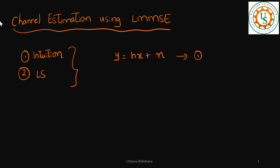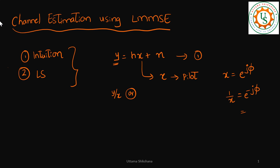The intuition is: since we know x — which could be our pilot — it is known to both the transmitter and receiver. So as soon as you receive y, you do the division. If you design the pilot in a certain way where it is like e^(j5), then the inversion can be given by 1/x = e^(-j5), which is actually the x conjugate. So we can just go for y times x conjugate, which will give me h plus n times x conjugate.